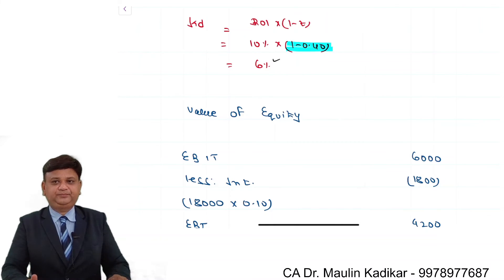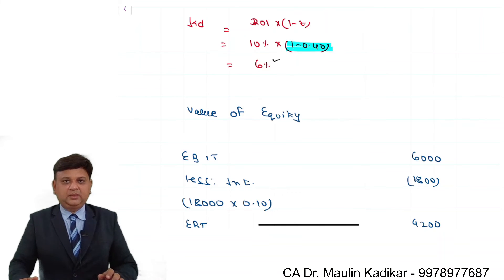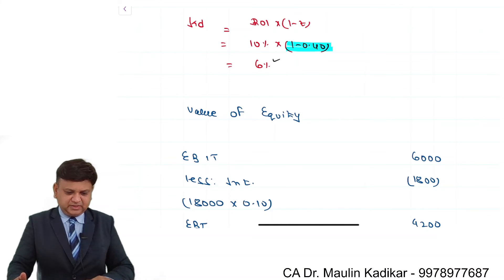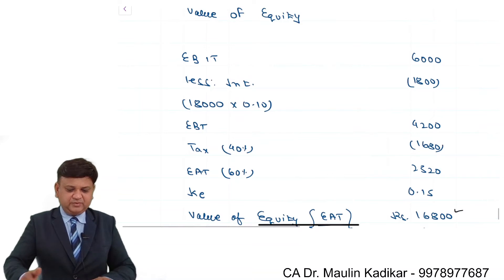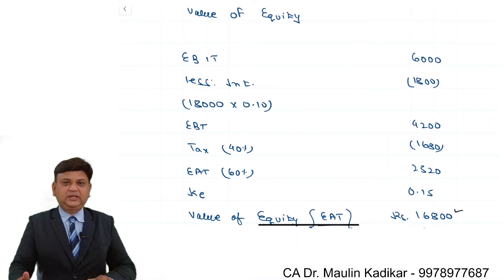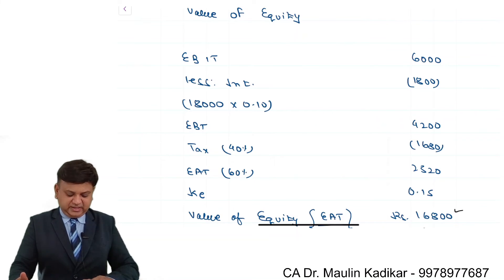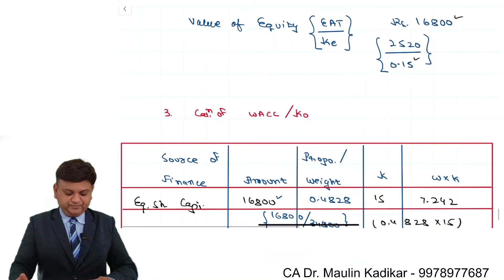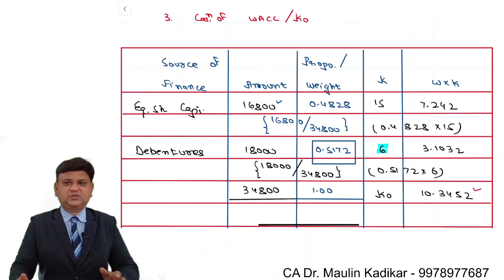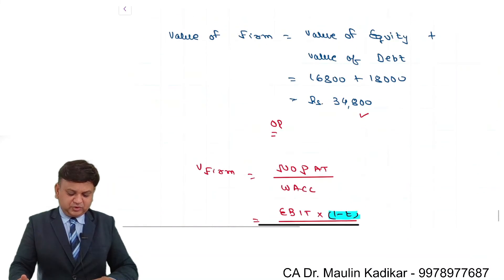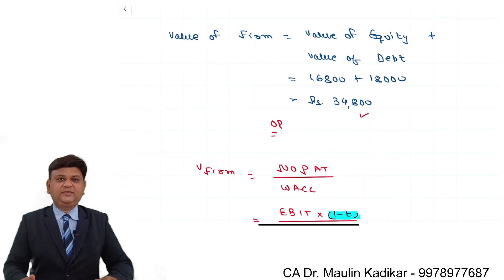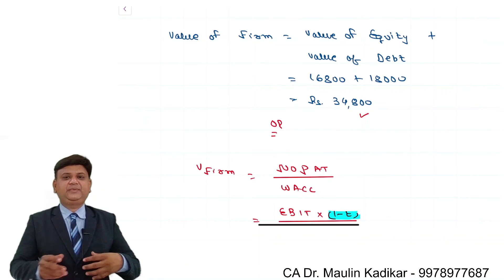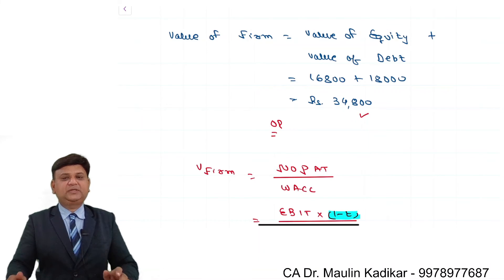Let us have a summary of the entire answer. In the first part, KD is required to be found. In the second part, we calculate the value of equity using the earning capitalization method — that is, earnings after taxes divided by Ke. In the third part, the weighted average cost of capital is calculated, which is straightforward. The fourth part is the most important: the value of the firm is calculated using the earning capitalization method, or as summation of the value of equity plus value of debt.